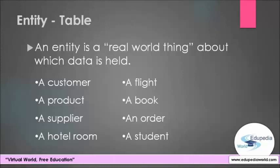So can you guess what kind of information we are interested to keep in a book? The name of the book, the price of the book, the author of the book, the edition of the book. Likewise, we can capture many pieces of information about an entity.